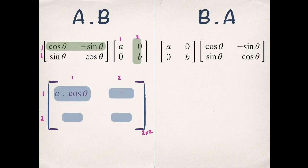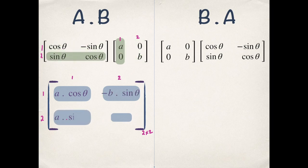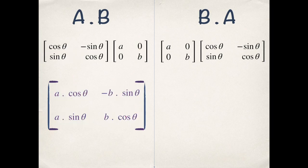Similarly this element first row and second column we get 0 times cos θ and minus b sin θ. Second row first column it's a sin θ. Second row second column it's b cos θ. Now similarly we'll find B product A.